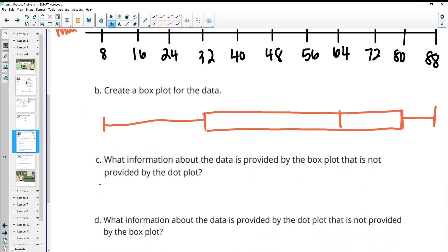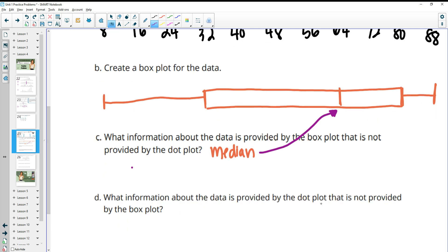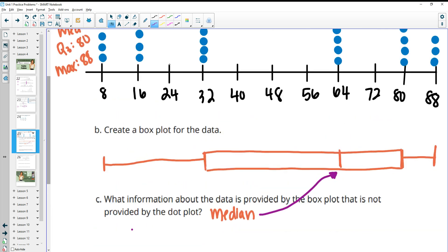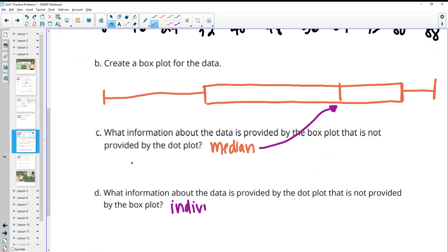Part C, what information about the data is provided by the box plot that's not provided by the dot plot? So we can immediately see the median in the box plot. So we know that the median is right here at 64. So without having to calculate anything, you already can see the median very easily. And you can see the split in fourths. So we can see every fourth of the data. And then in part D, it says, what information about the data is provided by the dot plot that's not provided by the box plot? So the dot plot up here, we can see all the individual data. So we can see all the individual data points. And therefore, you can see how many times each person has drank that amount of water versus here, you can only see that 25% of the data chunks.